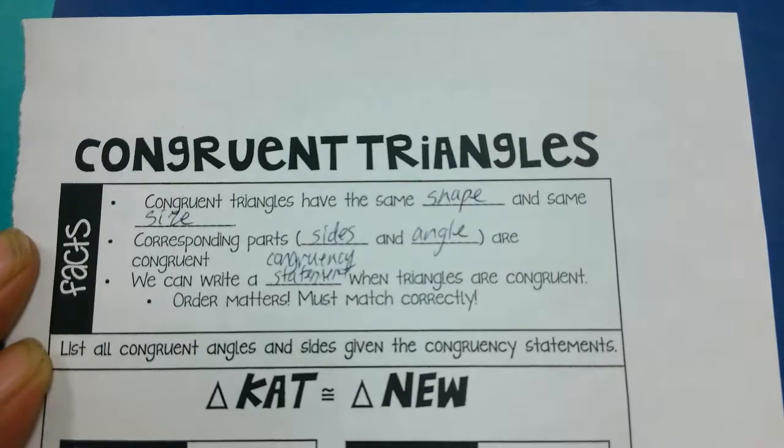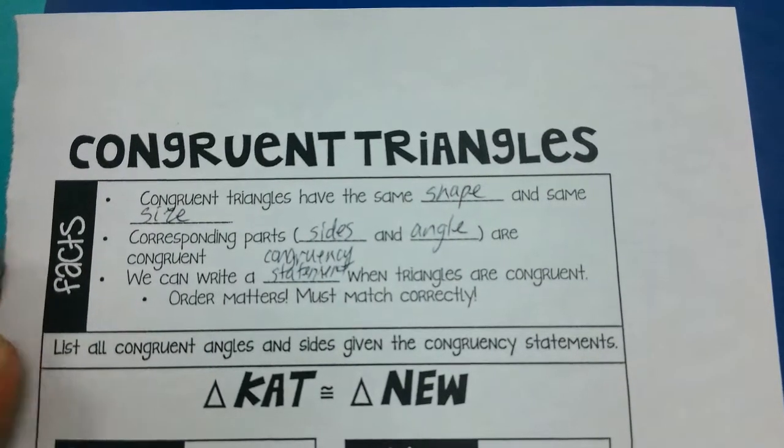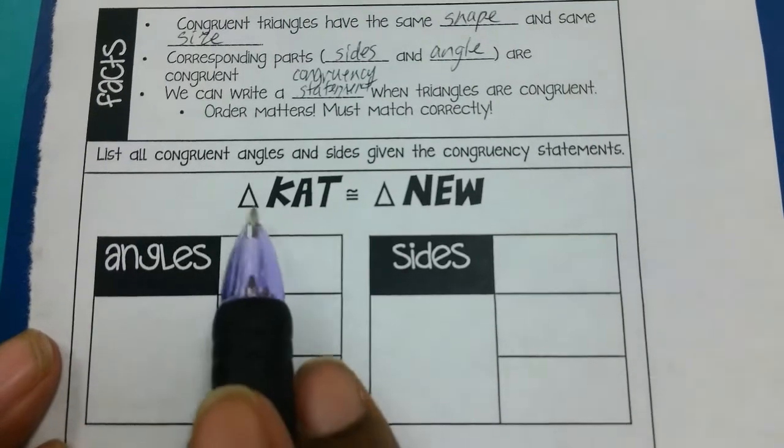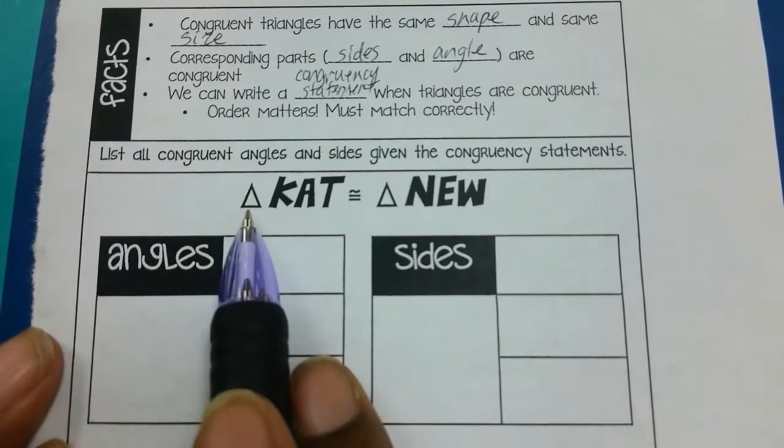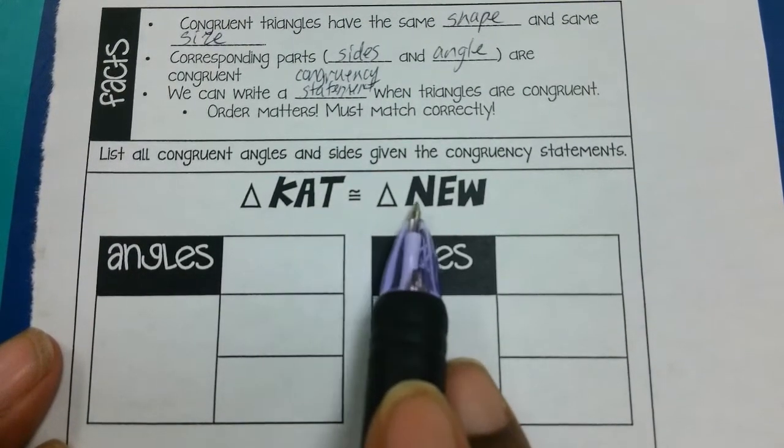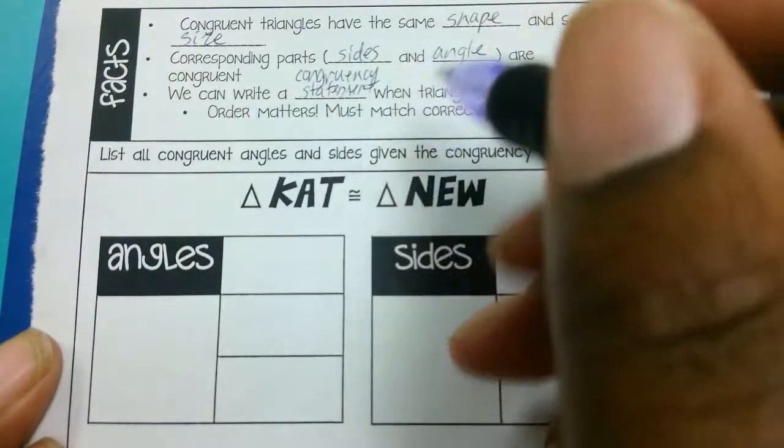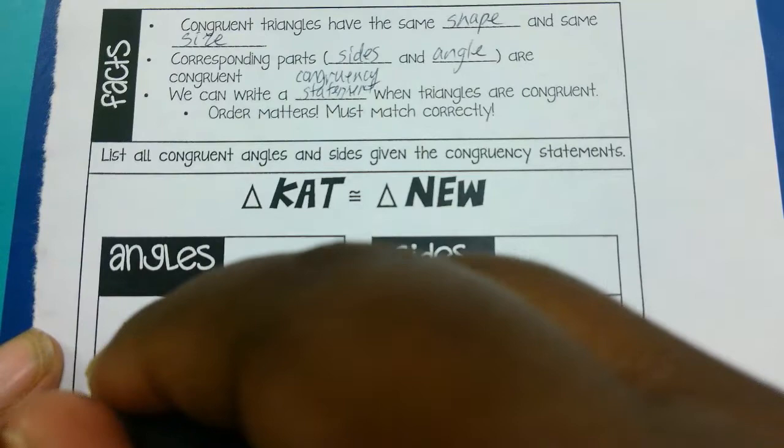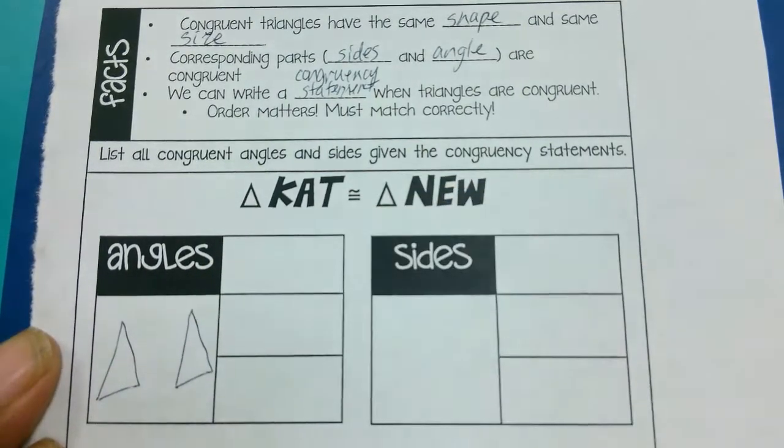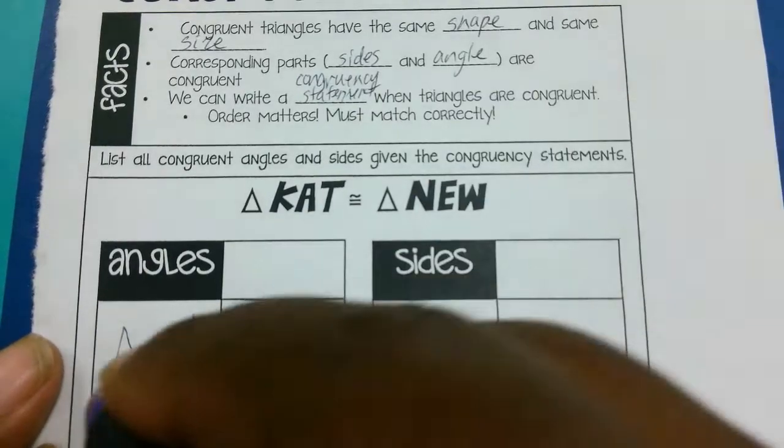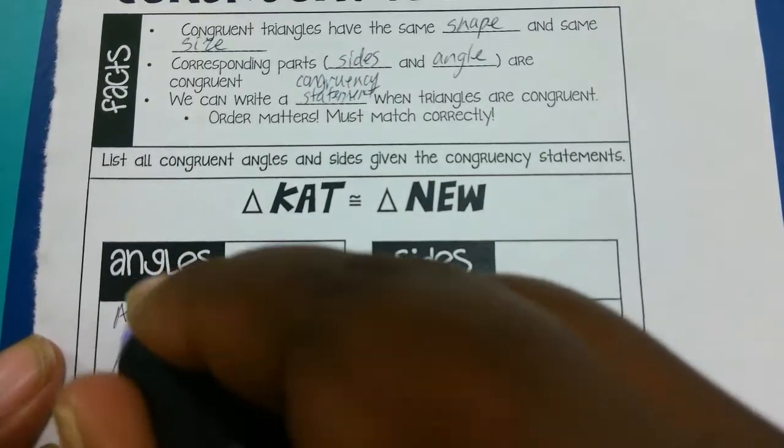When triangles are congruent, order matters and must match exactly. So right here is a triangle congruency statement: triangle KAT is congruent to triangle NEW. I could draw my two triangles. I make sure I label it exactly how it is, so KAT, and I'm going to use that same pattern, NEW.